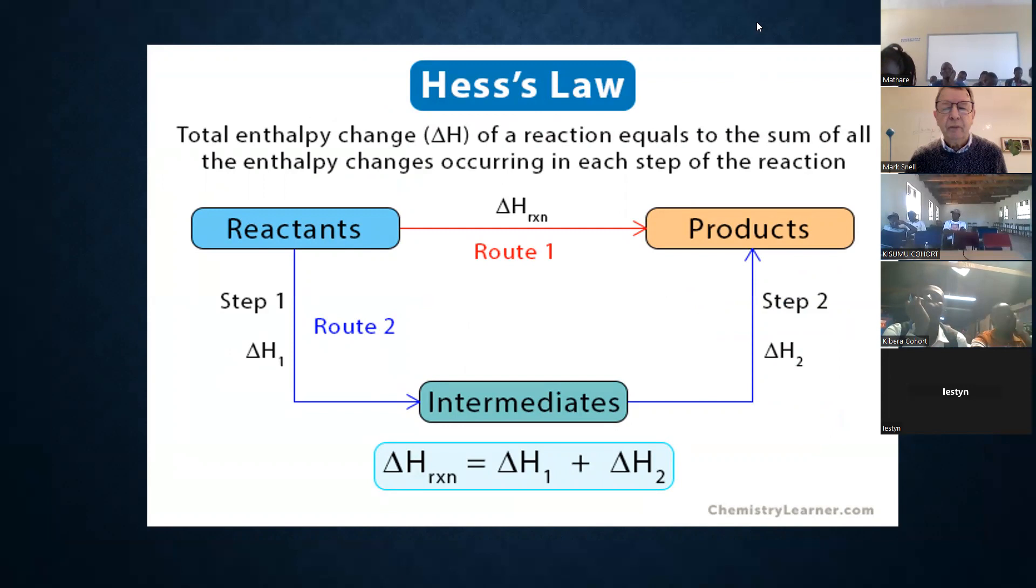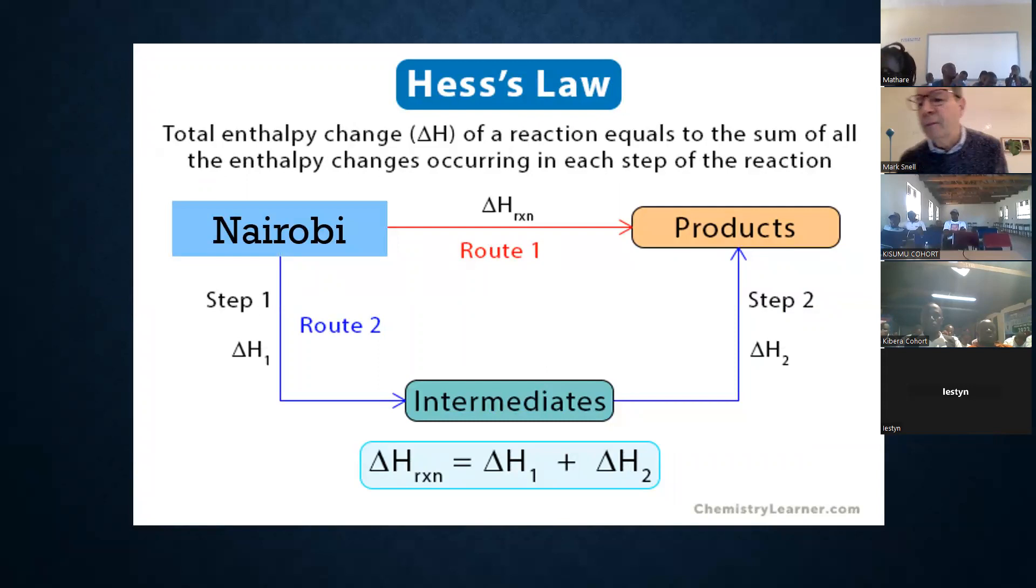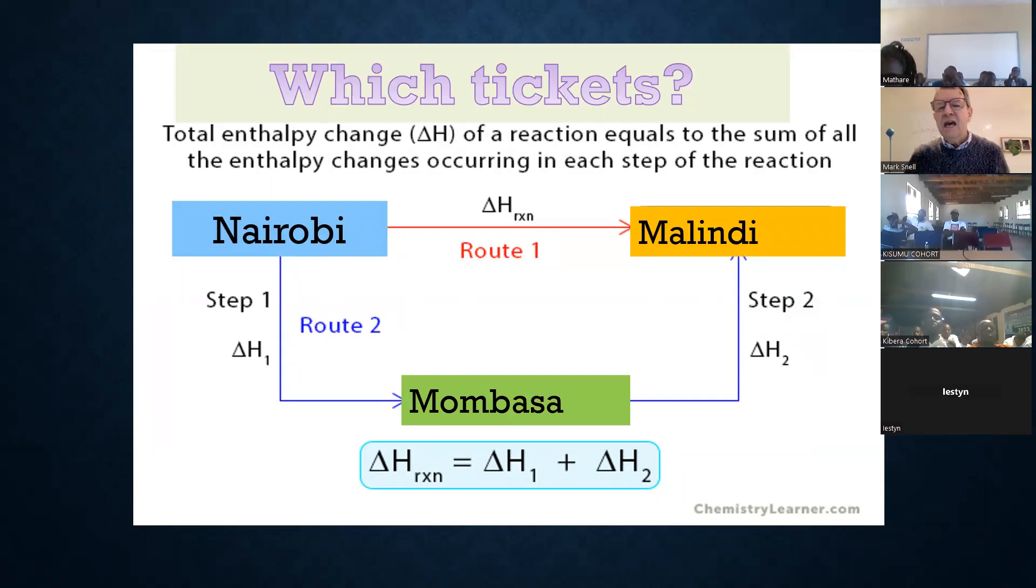Let's take a real example. Let's take ethene and hydrogen and turn it into ethane. But we can also do it via carbon and hydrogen. Sometimes this is a bit confusing to people, so I use a different way of doing it. I say, okay, let's talk about a journey and we're going to talk about going from Nairobi to Malindi. To go to Malindi, because the C103 is not very safe, I would go via Mombasa. And I'm gonna ask myself which tickets I need to get from Nairobi to Malindi via Mombasa.